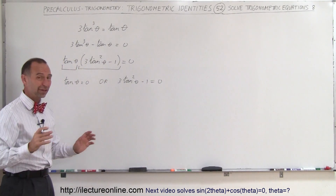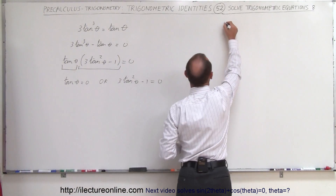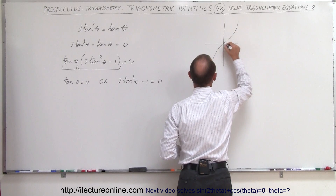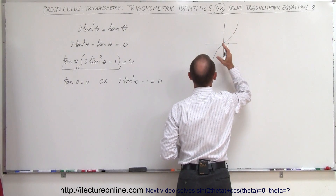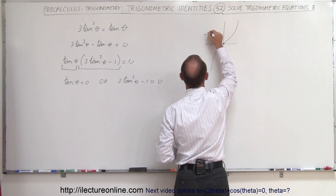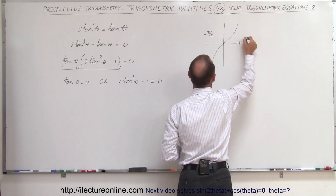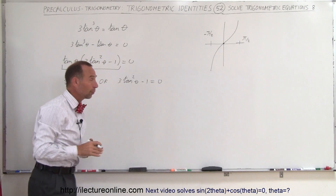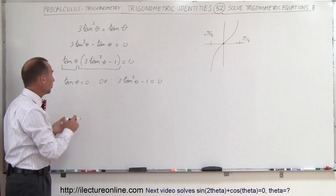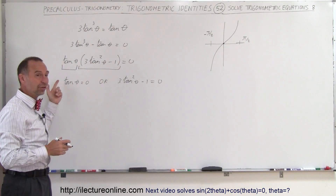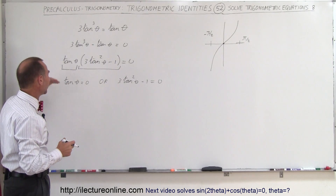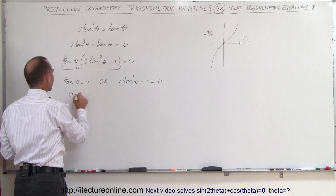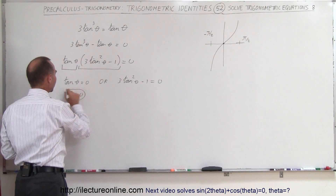The first equation is fairly straightforward. Remember, when we graph the tangent of theta, there is only one place where tan θ equals zero between −π/2 and +π/2, and that is where theta equals zero. The tangent is sine over cosine, so when sine equals zero, tangent equals zero. Therefore theta equals zero is the correct answer for that equation.